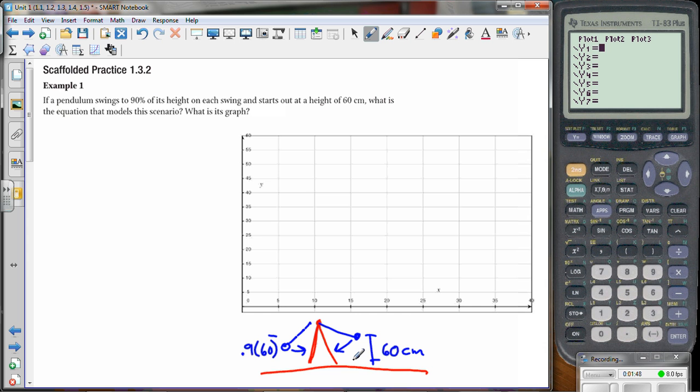So we want to graph the heights of each swing. Let's write an equation that models this. The exponential equation that we looked at from the previous lessons is y equals a times b to the x power. Now let's identify the different pieces here. a is your initial starting point, your initial value. b is your rate, your multiplier.